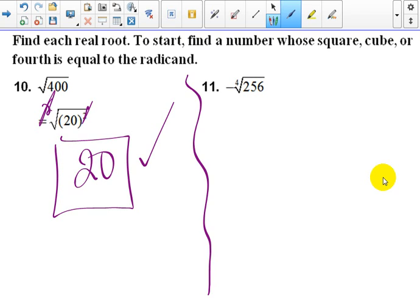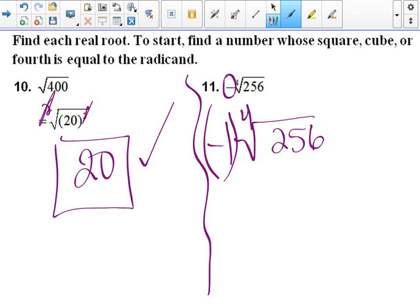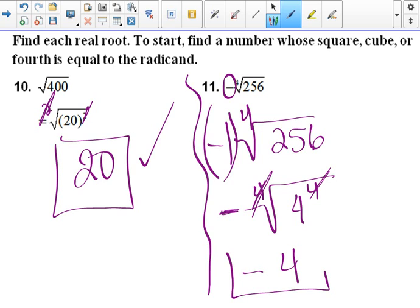And then for this one, notice that the negative is outside the radical, so that's got to stay outside of there. That's like multiplying everything by a negative 1. So what is the fourth root of 256? Well, if you take 4 times 4 times 4 times 4, you get 256. So that becomes 4 to the fourth power is 256. Then those cancel out. Don't forget that negative sign outside there. So it becomes negative 4 because that negative carries down each time. That's your answer.